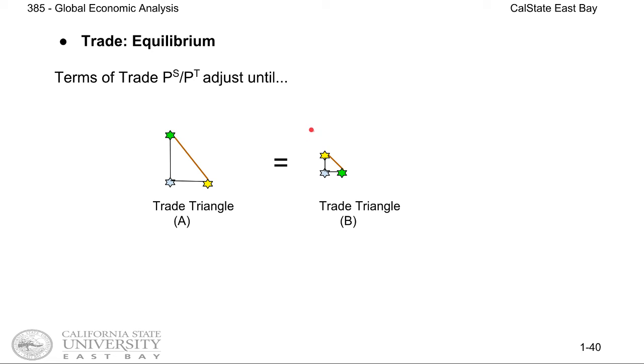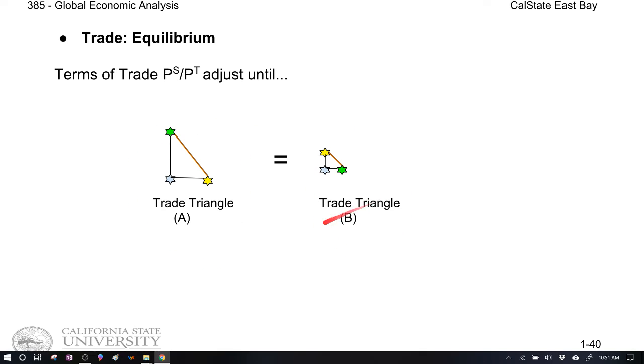In which case, we say we have reached an equilibrium or we have reached an agreement between country A and country B.